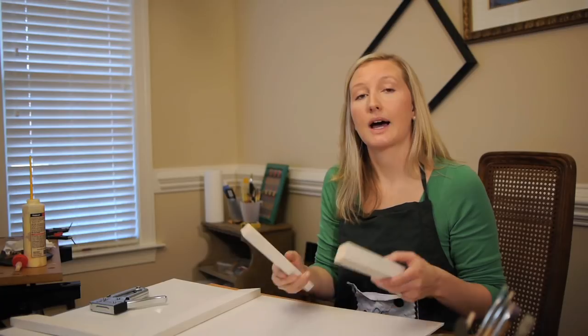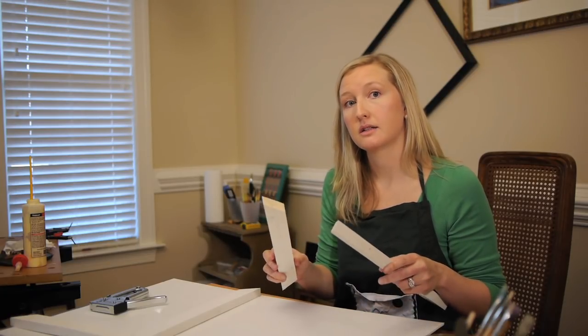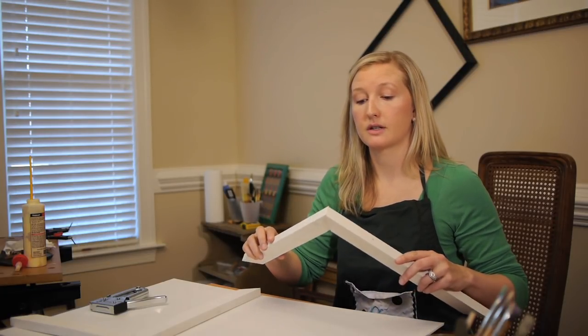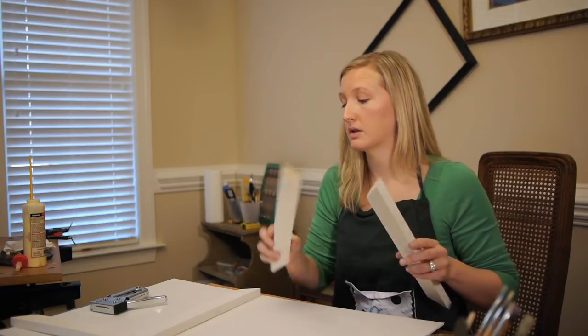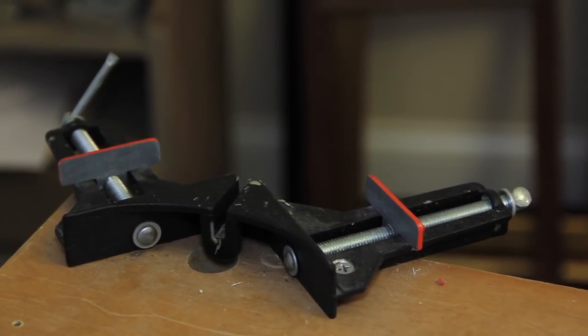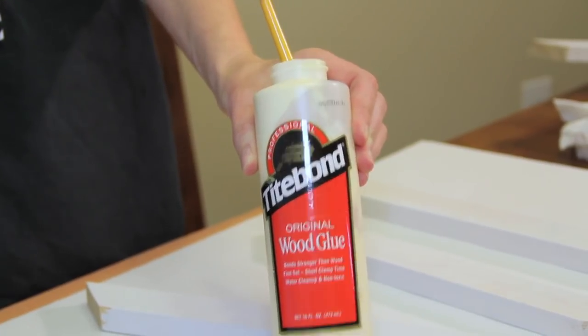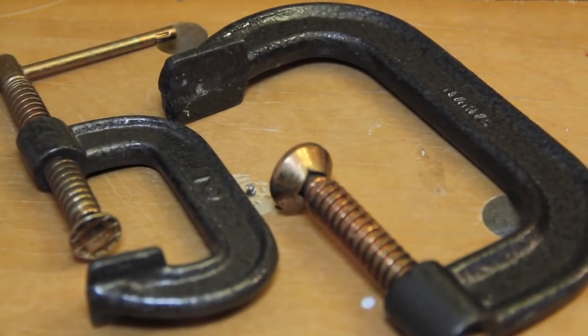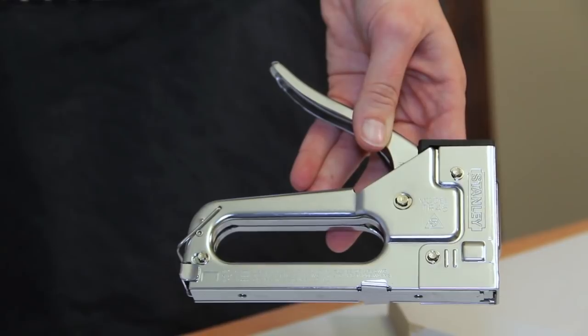Once you have your picture frame moldings cut to your 45 degrees in order to make your 90 degree corners, make sure that you have your vice grips, wood glue, clamps if you feel like you need more security from your vice grips, and a staple gun.